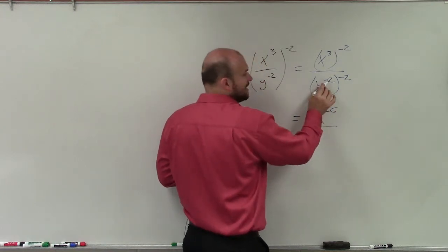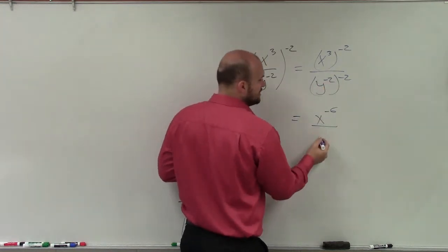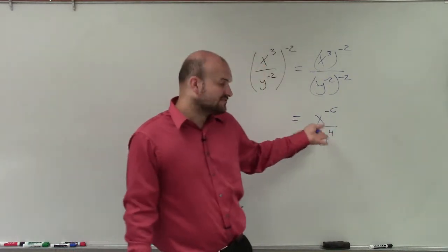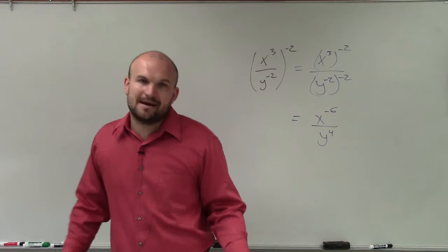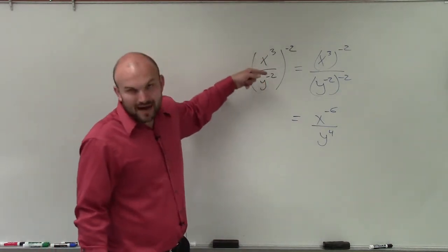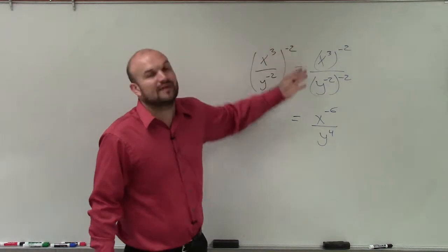And here, I have y to the negative 2 times negative 2, which would be y to the positive 4. So therefore, this 4 I'm actually not going to remove from my denominator. And that's why I like this rather than trying to rewrite these as positive terms and then rewrite that.